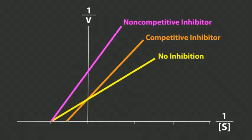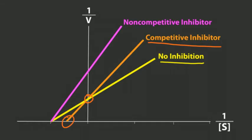What does that look like on the Lineweaver-Burk plot? The yellow line represents the uninhibited enzyme. When you add a competitive inhibitor, does it affect Vmax? Vmax is related to enzyme concentration, so it doesn't change — a competitive inhibitor does not affect Vmax, meaning the y-intercept doesn't change. But it does change the x-intercept, which reflects a change in KM. A competitive inhibitor increases KM because KM is the substrate concentration at half Vmax — it takes more substrate to get to half Vmax with a competitive inhibitor on board.